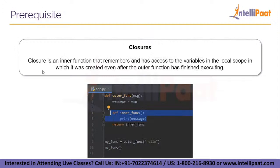Finally, we should know about closures. A closure is an inner function that remembers and has access to the variables in the local scope in which it was created, even after the outer function has finished executing. When we look at this code snippet, we have defined an inner function which prints out a message, and then it returns the inner function as an object — note, we are not calling the function here, we're just returning it as an object.